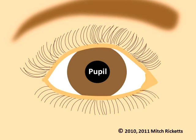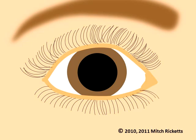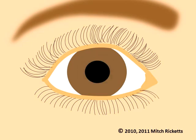The pupil is the dark central window into the interior of the eye. Images we see result from light that enters the eye through the pupil. The iris is the colored ring around the pupil. Muscles in the iris change the size of the pupil opening, making the pupil larger in dim light and smaller in bright light.